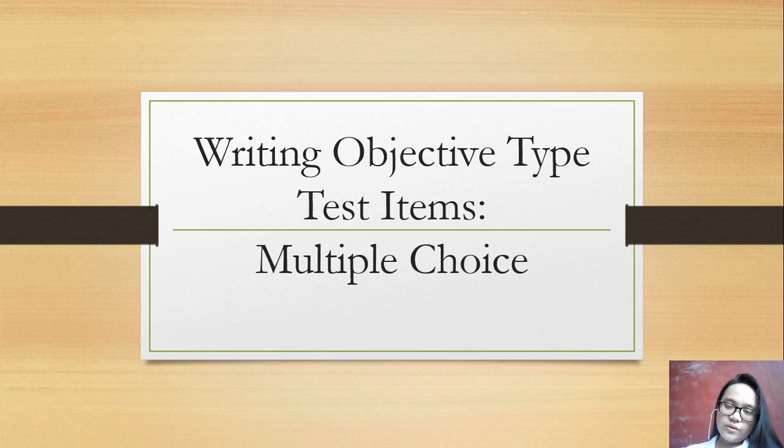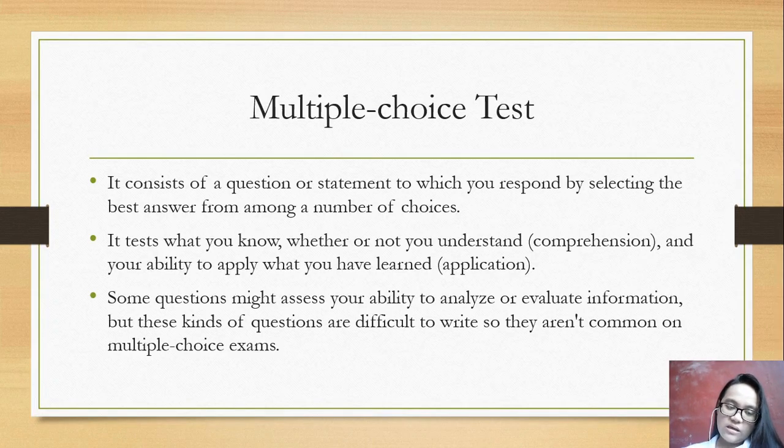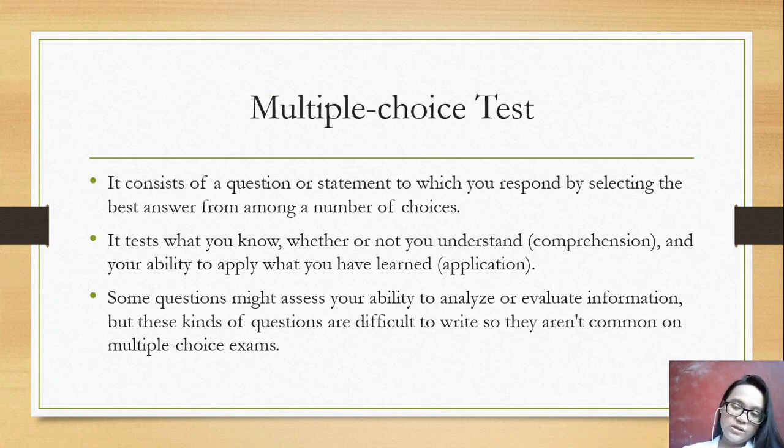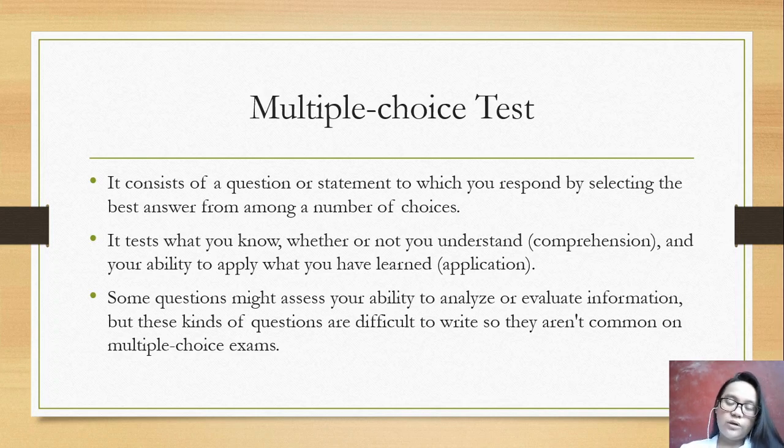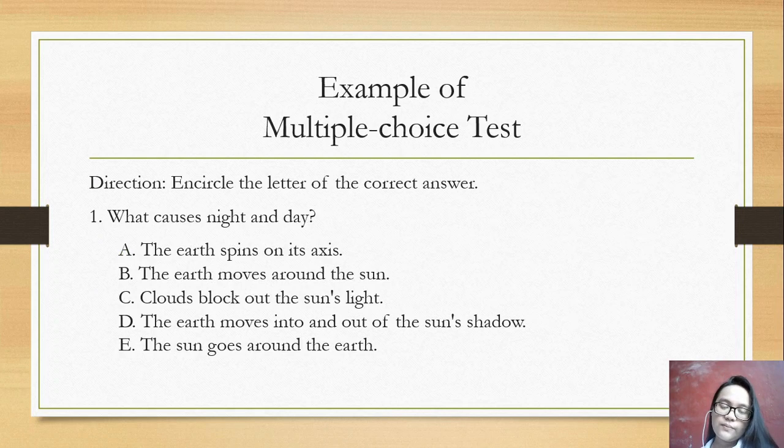Next is writing objective type test items: multiple choice. It consists of a question or statement to which you respond by selecting the best answer from among a number of choices. It tests what you know, whether or not you understand or comprehend, and your ability to apply what you have learned. Some questions might assess your ability to analyze or evaluate information, but these kinds of questions are difficult to write so they aren't common on multiple choice exams.